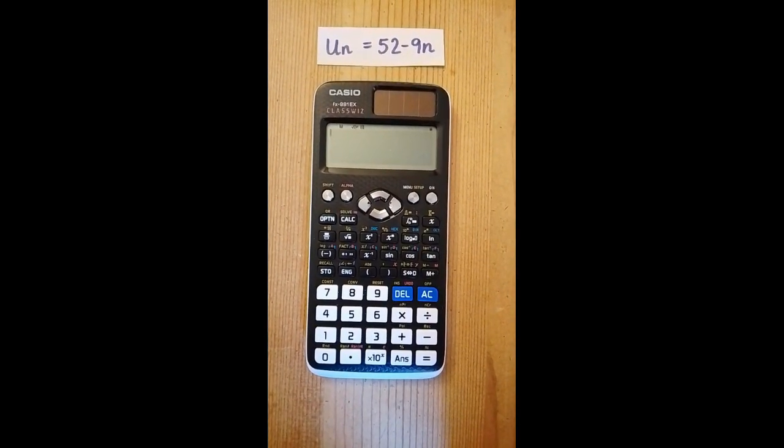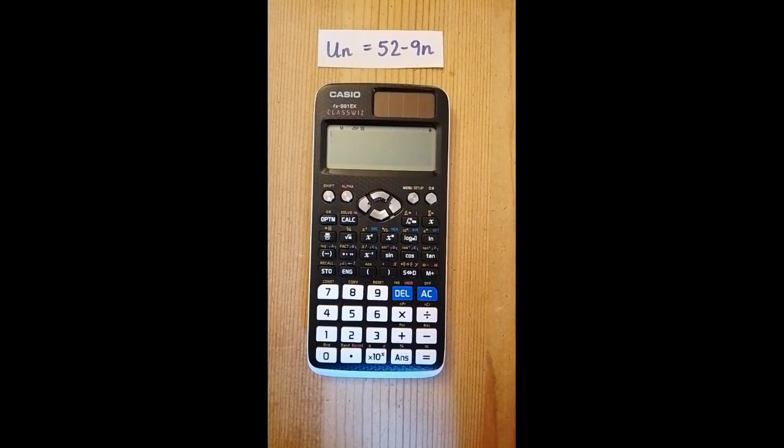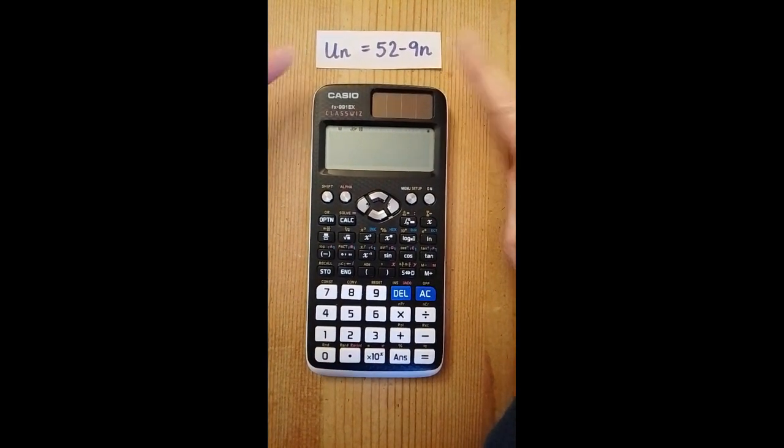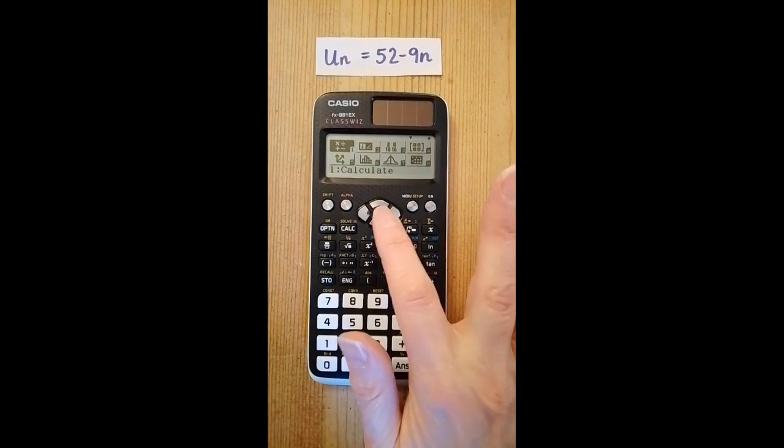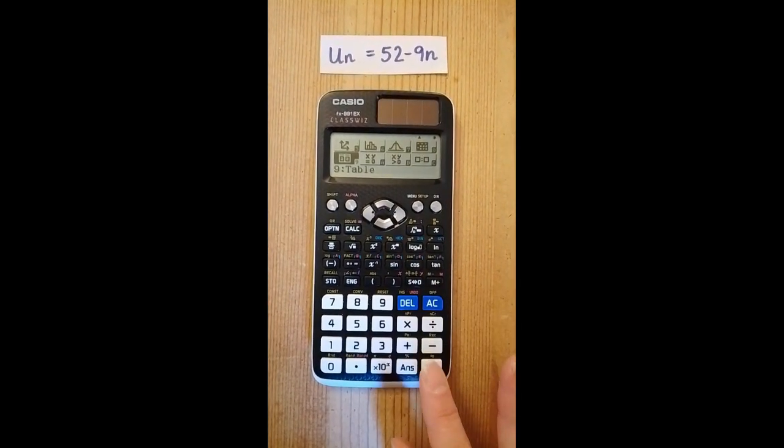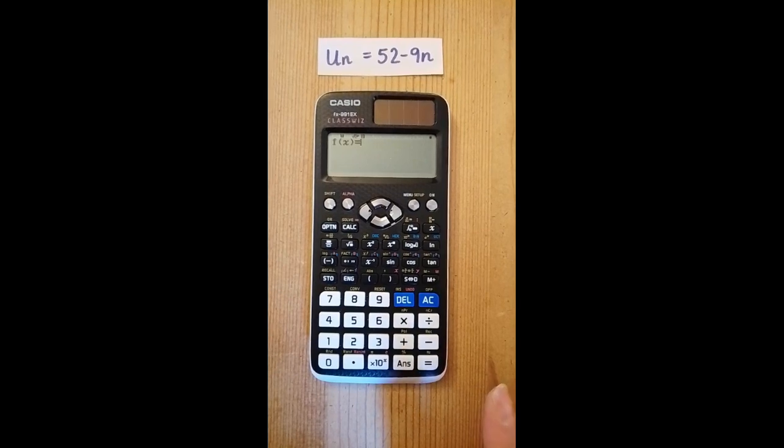Here's how to generate the first five terms of a sequence if you know the nth term, un. Press menu, scroll down 2 to get table mode, press equals to choose this.